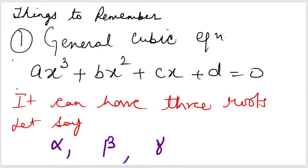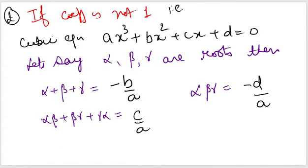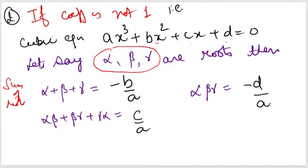For a general cubic equation with coefficients a, b, c, d, if alpha, beta, gamma are the three roots, the first relation is: the sum of the roots is always equal to negative b divided by a — that is, minus b by a. You divide the coefficient of x² by a and take the negative sign.